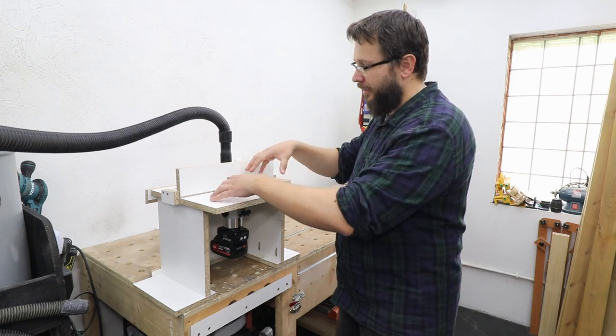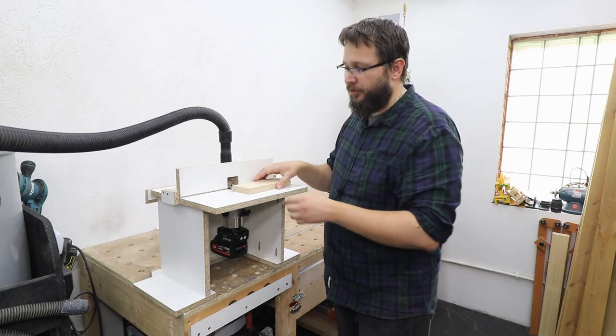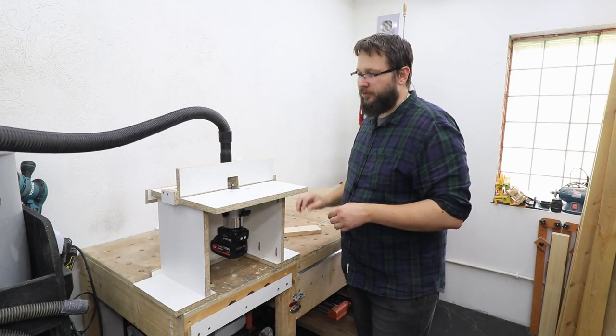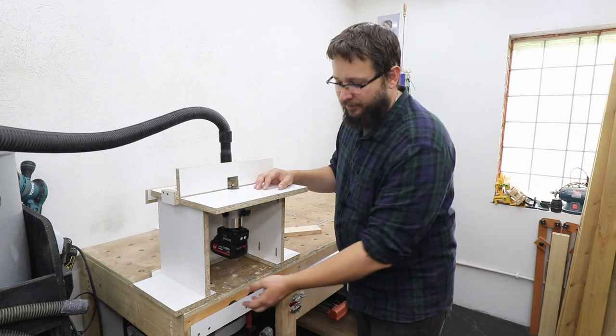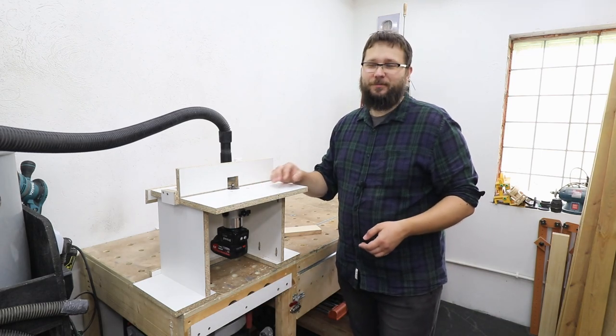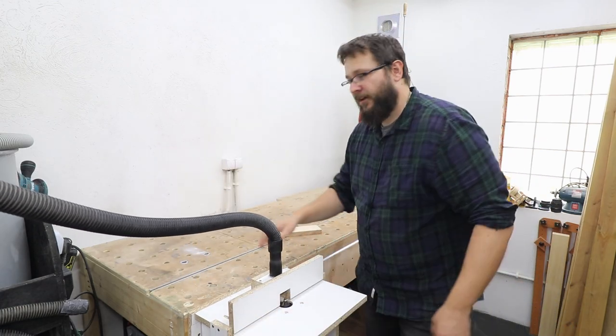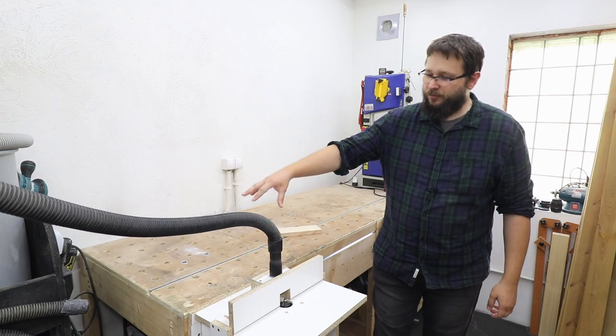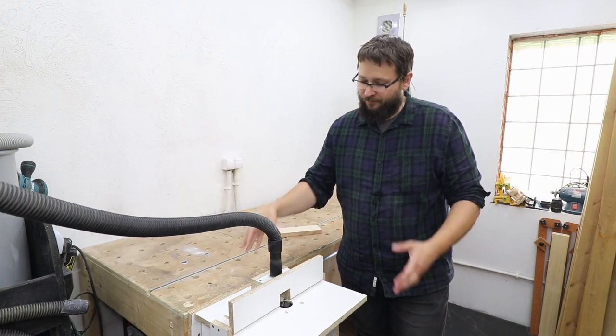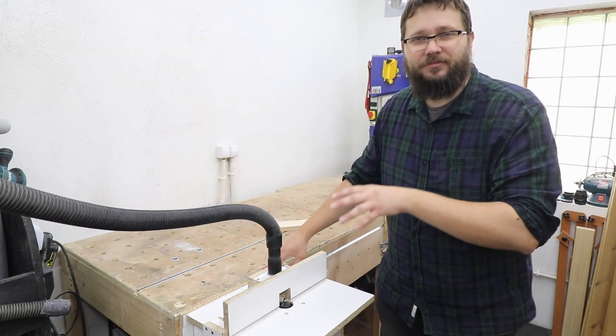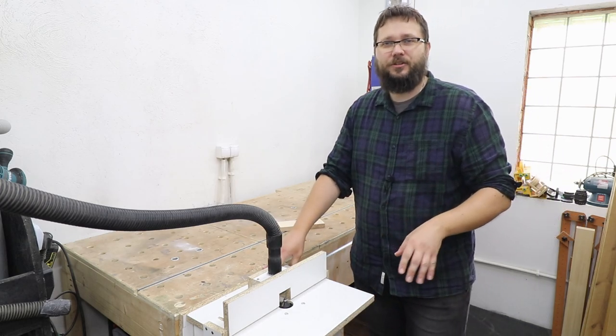You can also put this router table on top of your existing workbench so it's a little bit higher and easy to use with different types of materials. But if you install a French cleat to your workbench, you can have it flush with your workbench top.